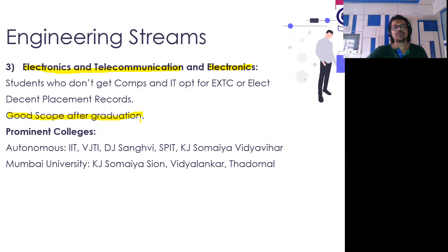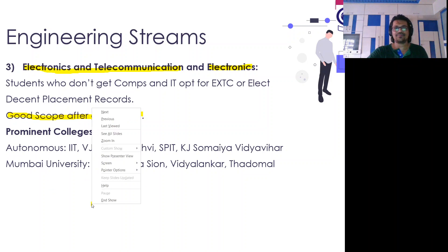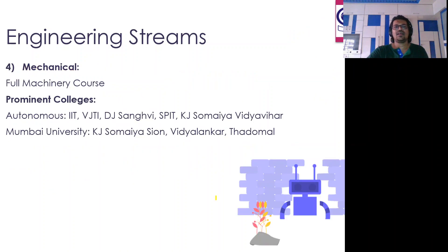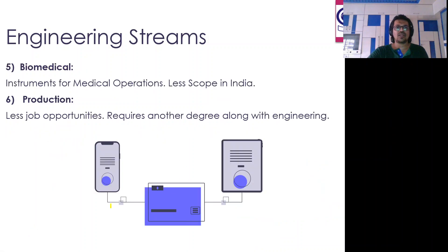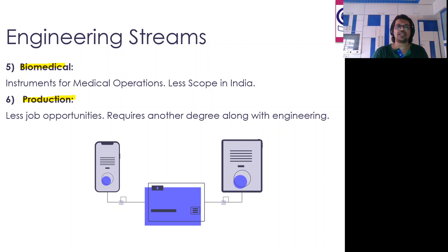After completing BTech or BE, there is scope for further studies which we'll discuss. Mechanical engineering is the mother of all engineering — always one of the best. Biomedical engineering is mainly about instruments used in hospitals — that scope is with respect to biomed. Production engineering is a sister concern of mechanical, and if you want to get into specific production-related work, this is the field that will be of very good help.